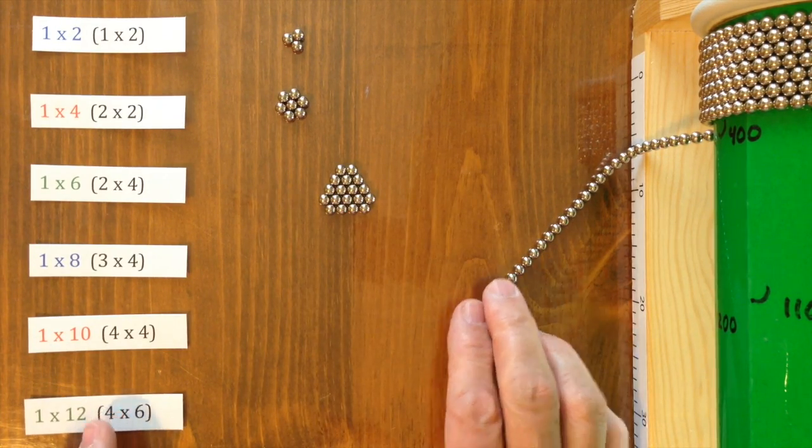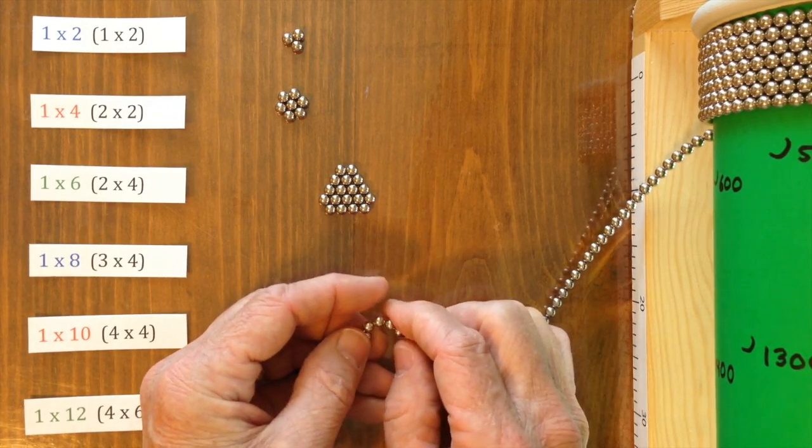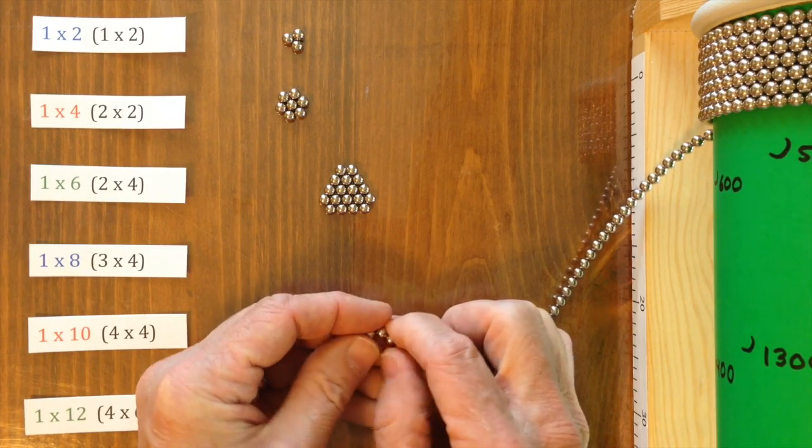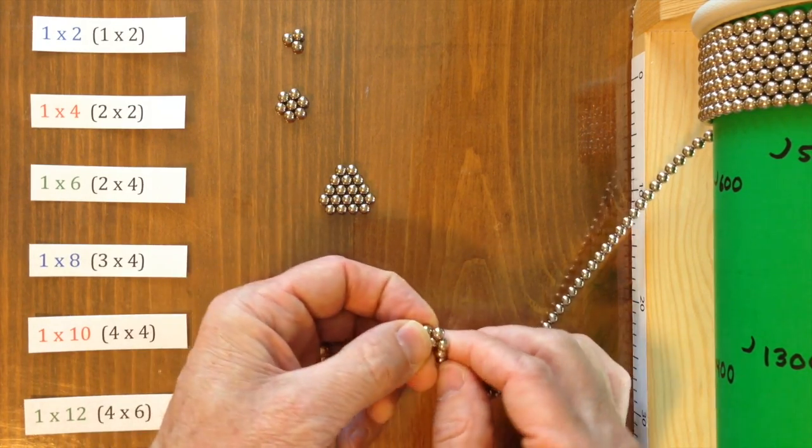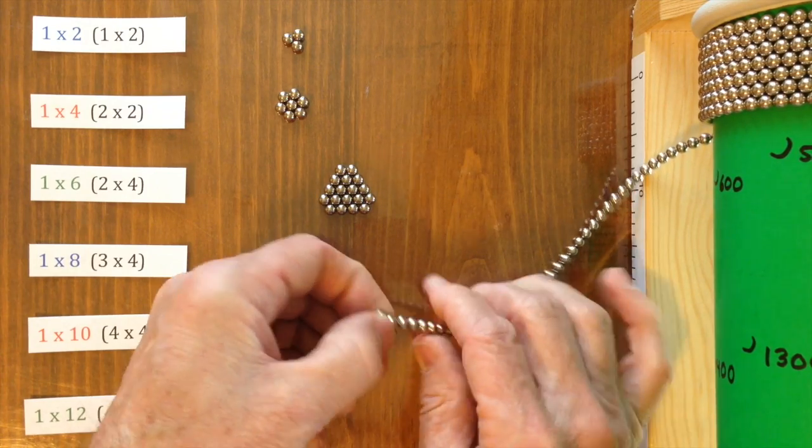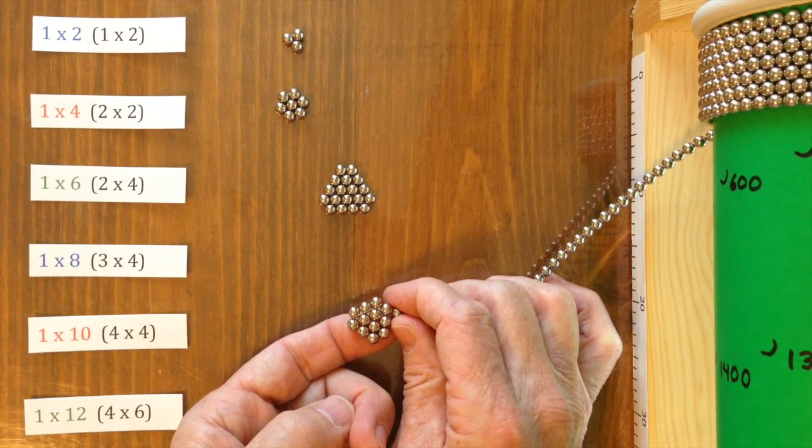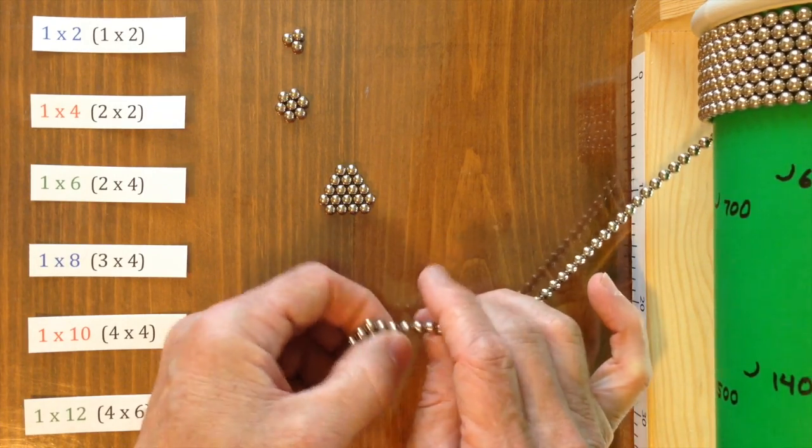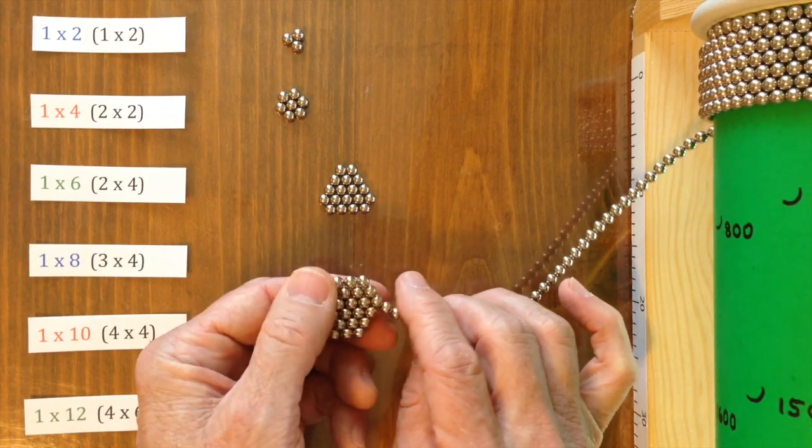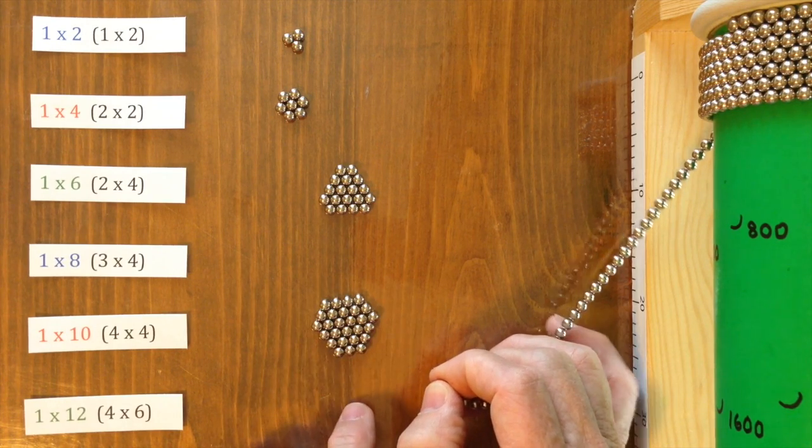So then we need a 3 by 4. And to make the 3 by 4, you start off with a 1 by 2 triangle and then wrap one complete layer around it to make a 2 by 3. And then add another layer around it to make a 3 by 4.